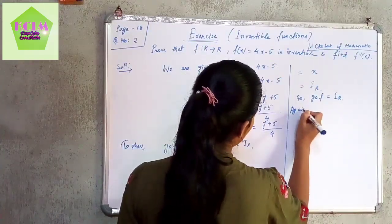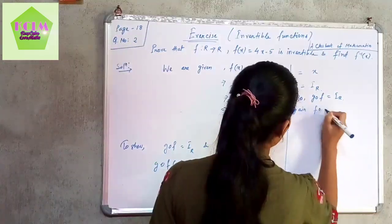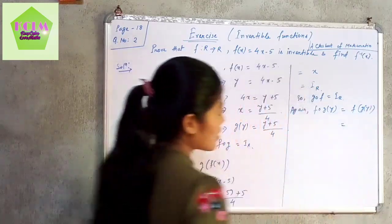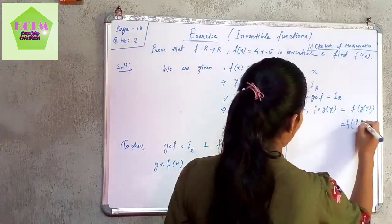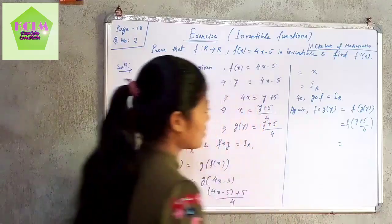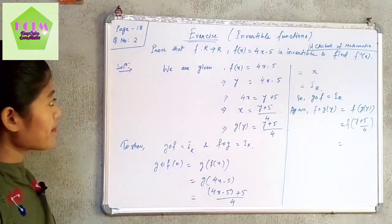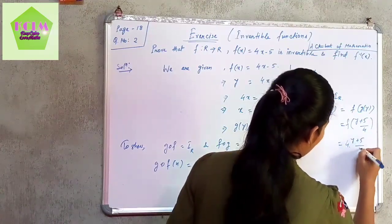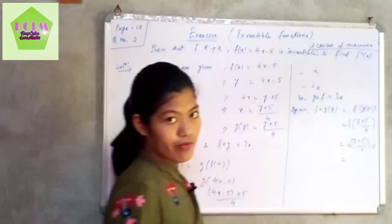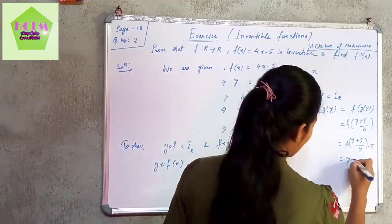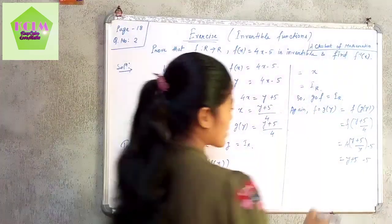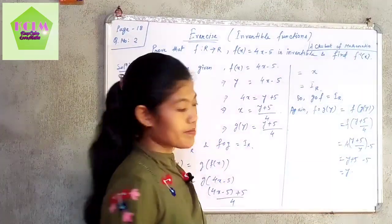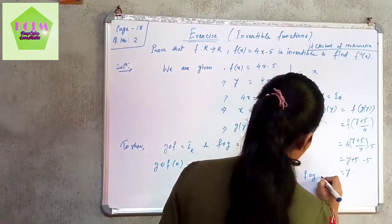Again, for an element y, f∘g(y) = f(g(y)) = f((y + 5)/4). Since f(x) = 4x − 5, we replace x with (y + 5)/4: f((y+5)/4) = 4·(y+5)/4 − 5. The 4s cancel, giving y + 5 − 5 = y. So f∘g(y) = y, therefore f∘g = I_R.